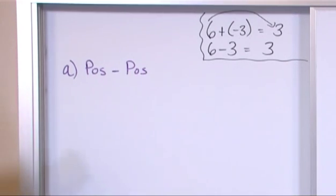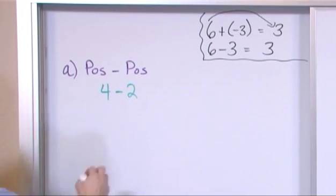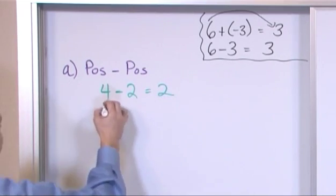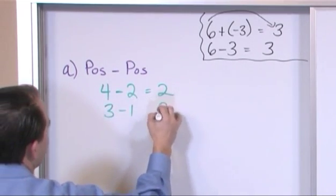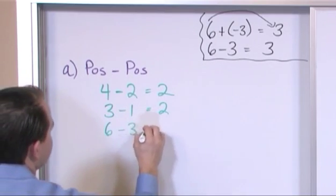So what would be some examples that would fall into this bucket? Well, these would be examples you've seen all your life. Here's a positive number four minus two, which is another positive number. And the answer to that is two. These are not rocket science. Three minus one also gives you two. Six minus three, we just did that one, gives you three.